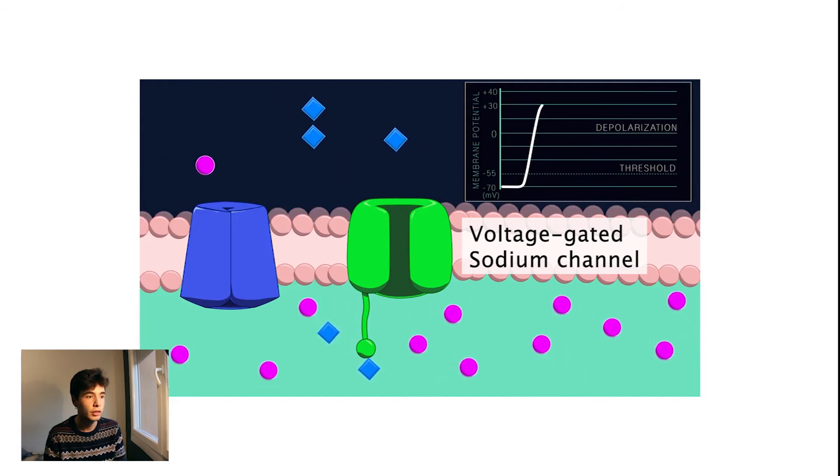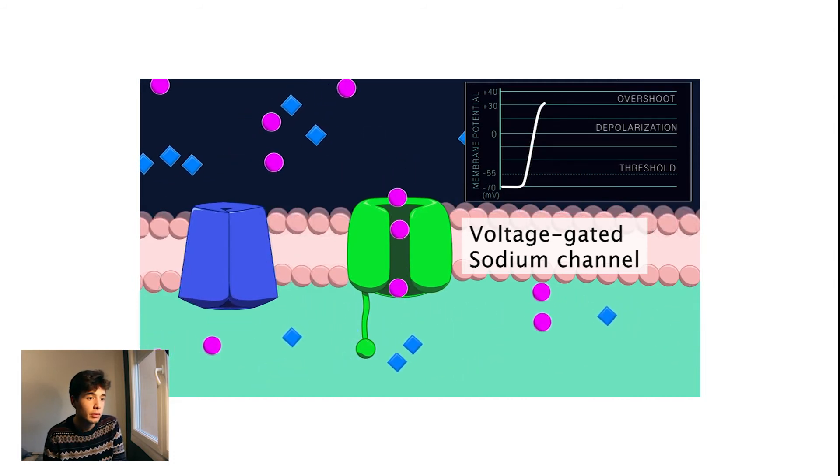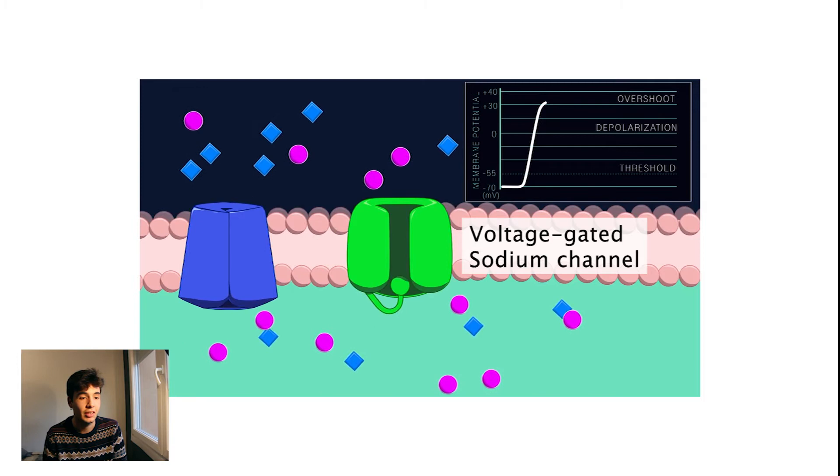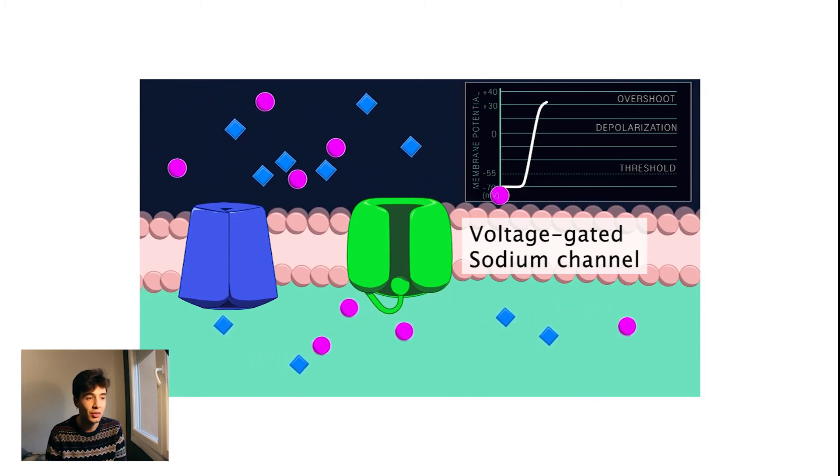But then, when the voltage reaches the threshold, the voltage-gated sodium channels allow the positively charged sodium ions to get into the neuron. These channels close when the voltage reaches around 40 millivolts, and only then do the voltage-gated potassium channels open.